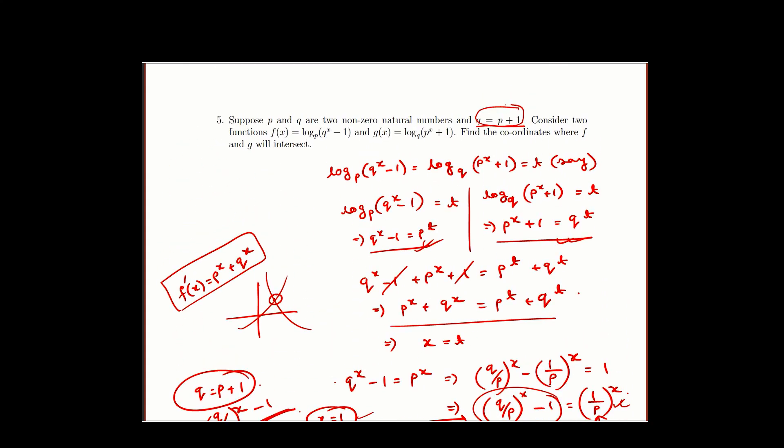We have to find the coordinate where f and g will intersect, i.e., the value of x and the function f(1). f(1) will be log base p of q^(1−1), which is log base p of q^0... so f(1) equals log base p of (q−1). Hence, the coordinate where f and g will intersect is (1, log_p(q−1)).